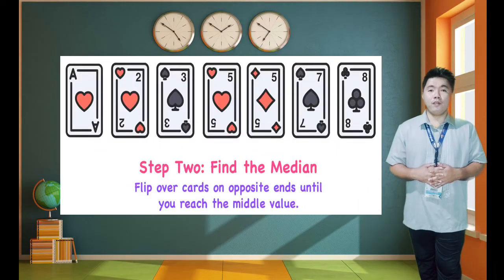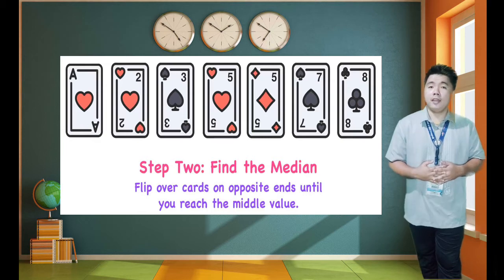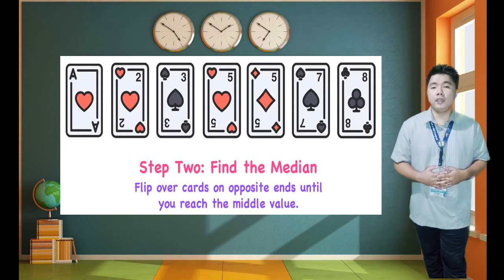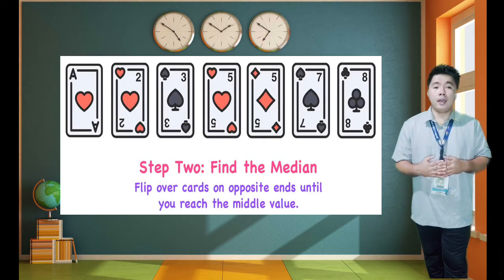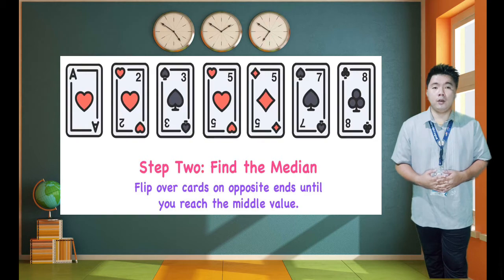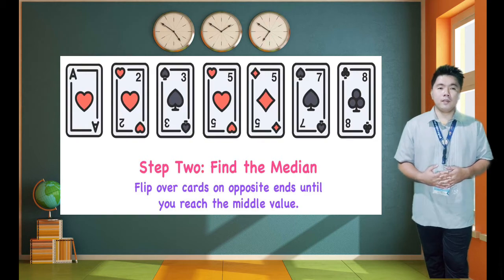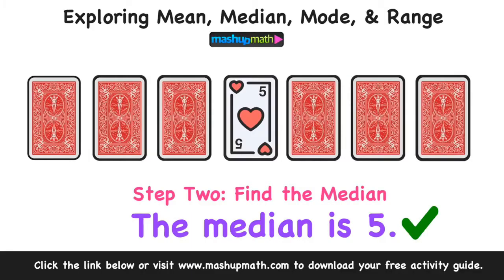From those 7 cards, we need to flip over the cards on opposite ends until we reach the middle. The middle card is the 5th card. So that means our median is 5.